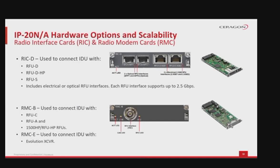The hardware options within IP20N and IP20A include RFU interface RIC-D for use with RFUD or RFUS with integrated Power over Ethernet, and RFUDHP powered by external DC power, supporting channel bandwidth up to 112 MHz and 4K QAM modulation. RMCB can be used with RFUC, RFUA, 1500HP, and RFUHP radio units, supporting channel bandwidth up to 56 MHz and up to 2K QAM modulation with header duplication, multi-carrier ABC, XPIC, space diversity, IF combining, and baseband switching. All Saragon RFUs support adaptive modulation ACM. A special case is the RMCE, used only with legacy Evolution RFUs.